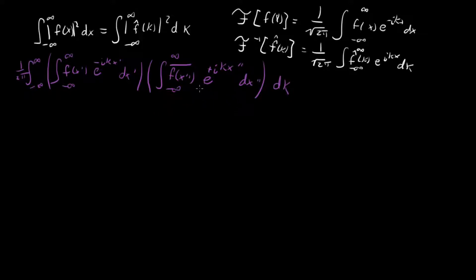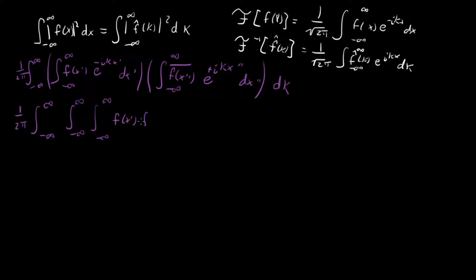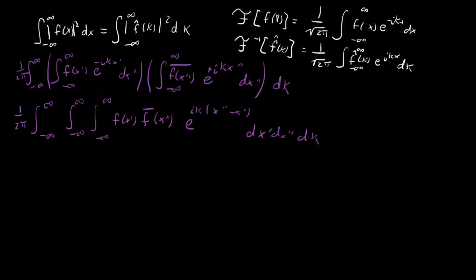Now we use the usual trick: we combine these two integrals since they're with respect to different variables. What we get is a bunch of integral signs out in front, with f of x prime, the complex conjugate of f of x double prime, and the two exponentials adding up to e to the i k times x double prime minus x prime, then dx prime dx double prime dk.